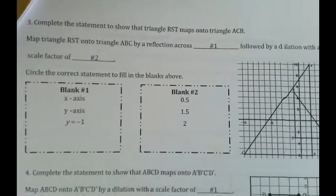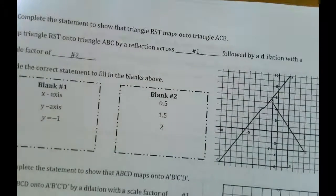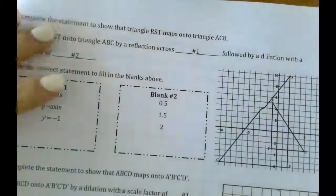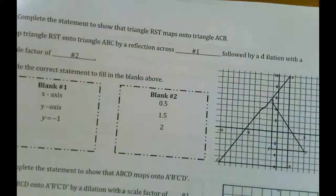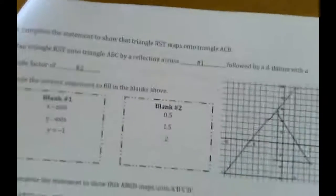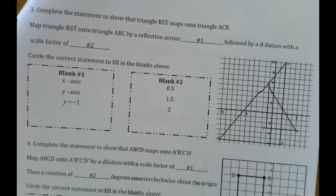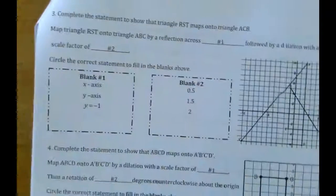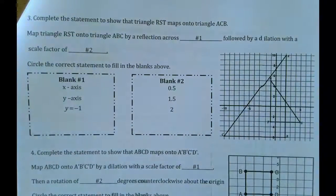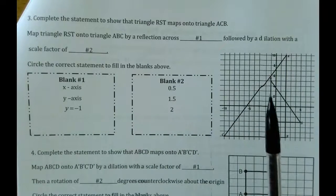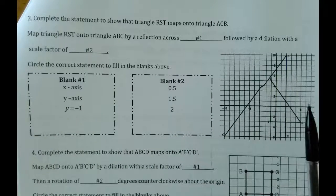This graph looks a little bit weird. Something happened here, but that's okay. We'll just use our points to help us. So it says map triangle RST onto triangle ABC by reflecting across some line followed by a dilation. So if you look at our original triangle RST, here's our original triangle.